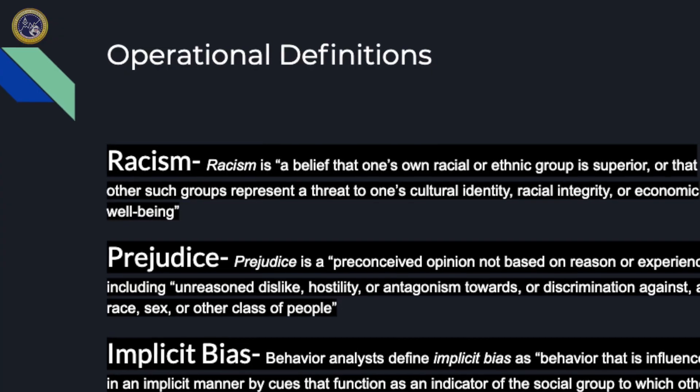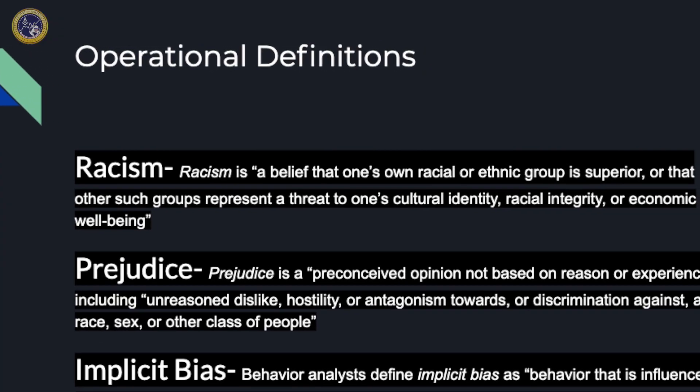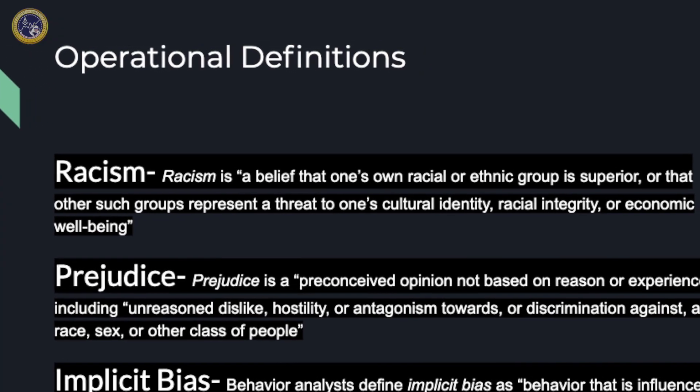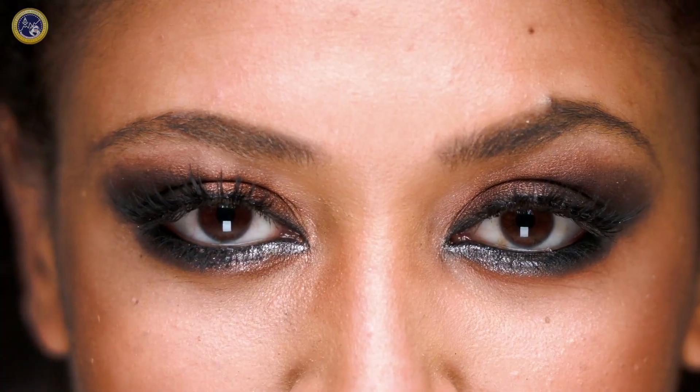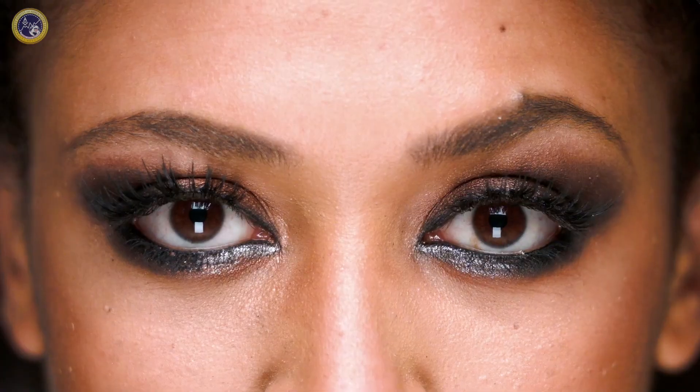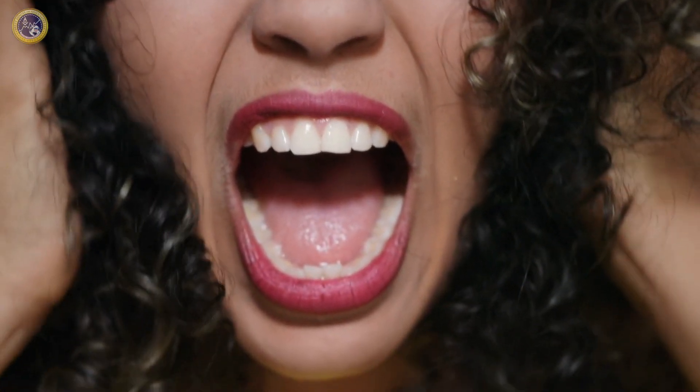How do we measure these things? Racism is a belief that one's own racial or ethnic group is superior — whether that's through identity, racial integrity, or economic well-being. Prejudice is different — sometimes they're used interchangeably, but it's different. It's a preconceived opinion or notion about somebody based on their race, class, gender, or something else about them.